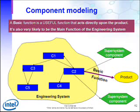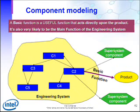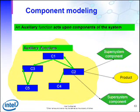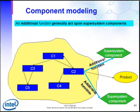We further describe the system to show a basic function, which is a useful function that acts directly upon the product, and it's most likely the main useful function of the engineering system. We use the term auxiliary to describe any function that acts upon components inside the system itself. And finally, we use the term additional function to describe any function that acts upon the super system components in our system.